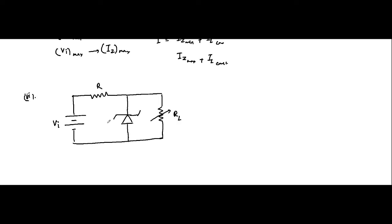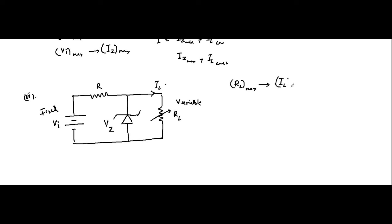Another case is when the load resistance is variable and the input is fixed. In this case, the load current is also variable. When the load resistance is maximum, that gives rise to minimum load current; and when the load resistance is minimum, that gives rise to maximum load current.